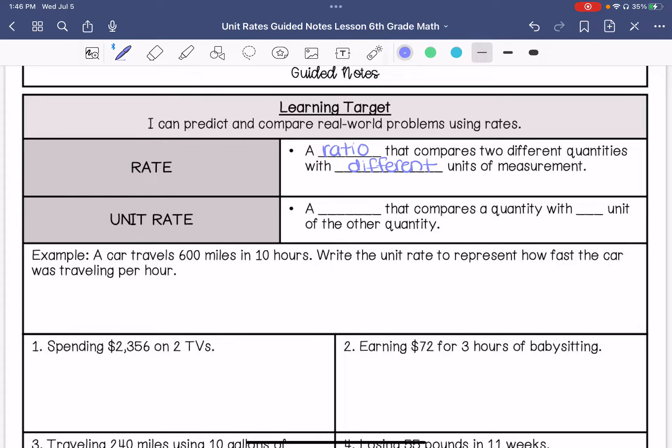For example, we rode 20 miles in two minutes. That would be really fast. 20 miles in 30 minutes. A rate, a unit rate, is a rate that compares a quantity with one unit of the other quantity.